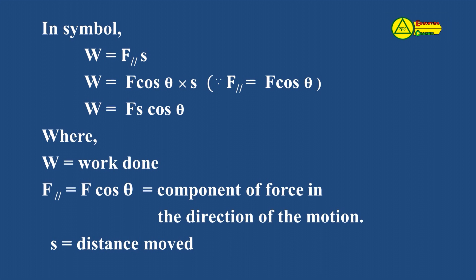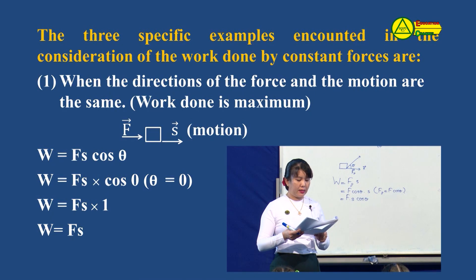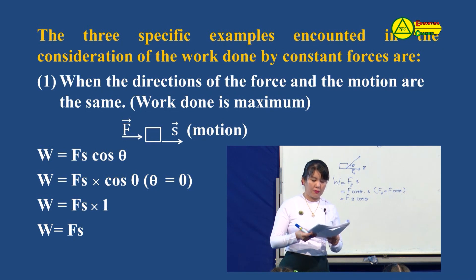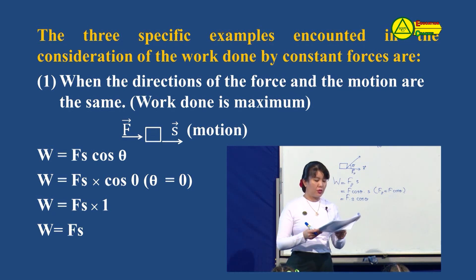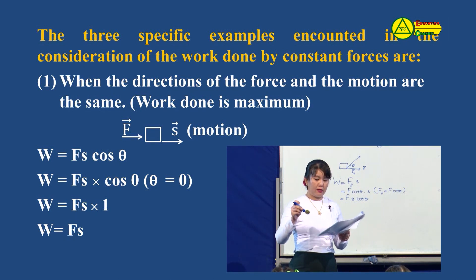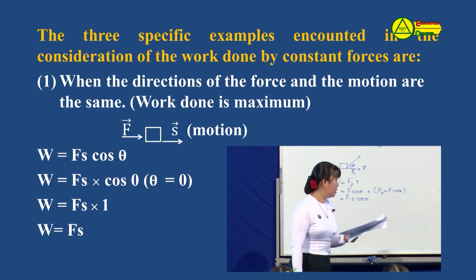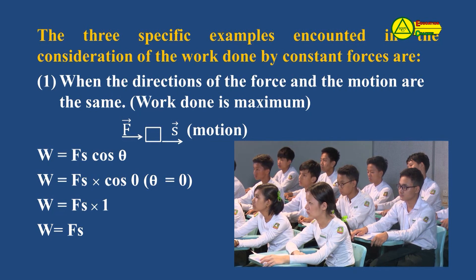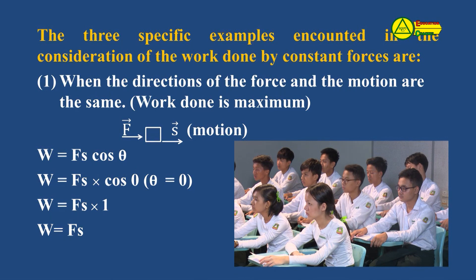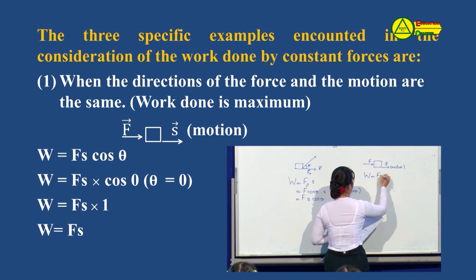We will give F and F cos θ. Now we know that the three specific examples encountered in the consideration of the work done by constant force are the same. When the direction of the force and the motion are the same, the direction of the force and the motion is the same. The direction of the motion is equal to Fs cos θ.